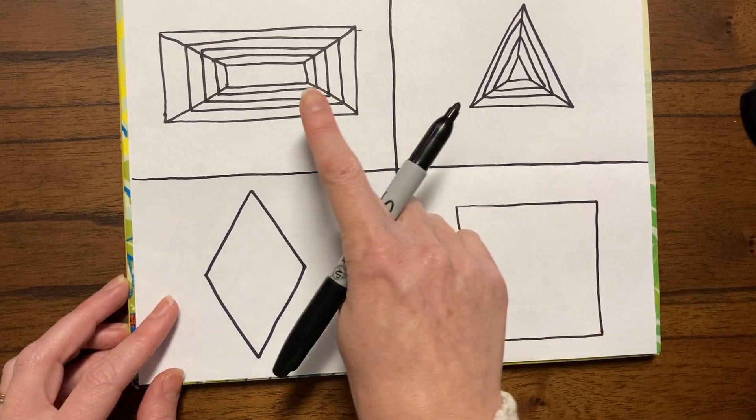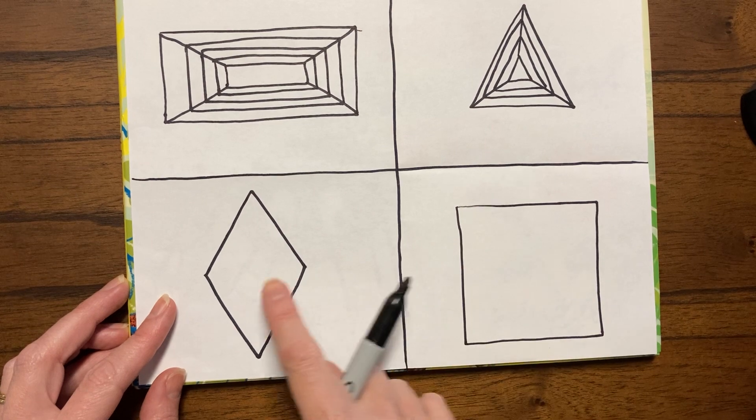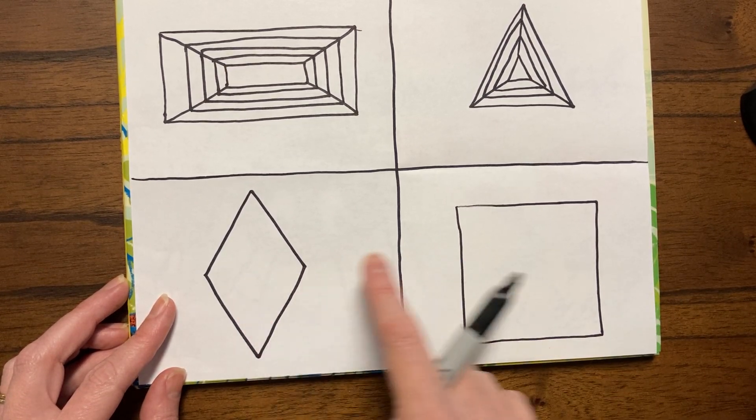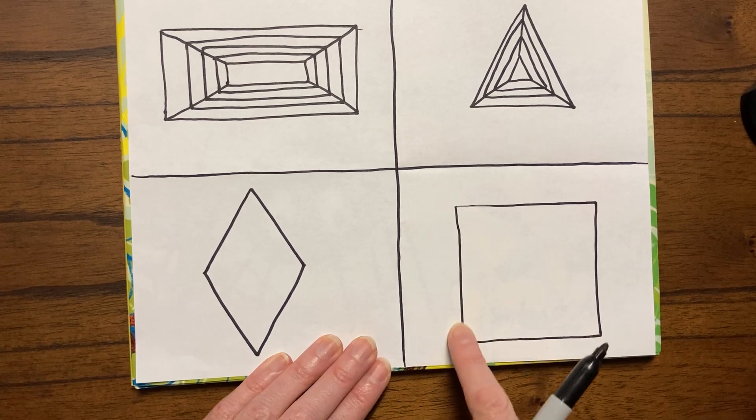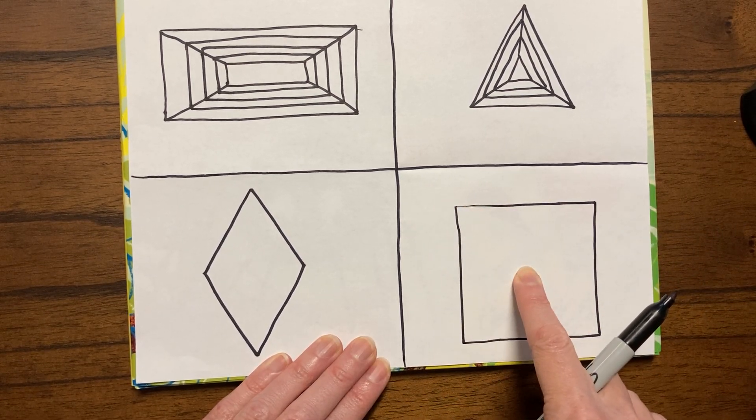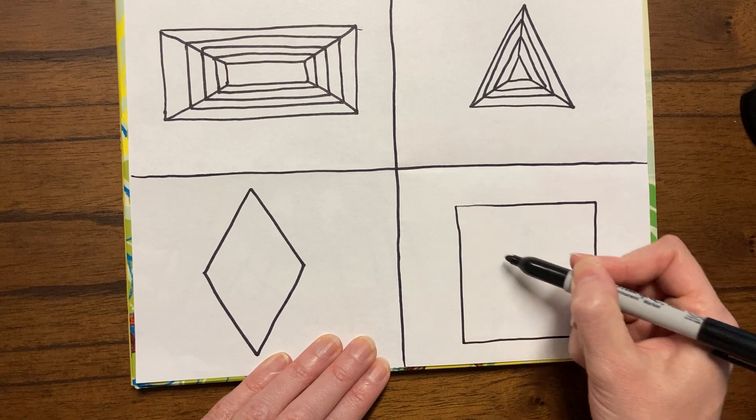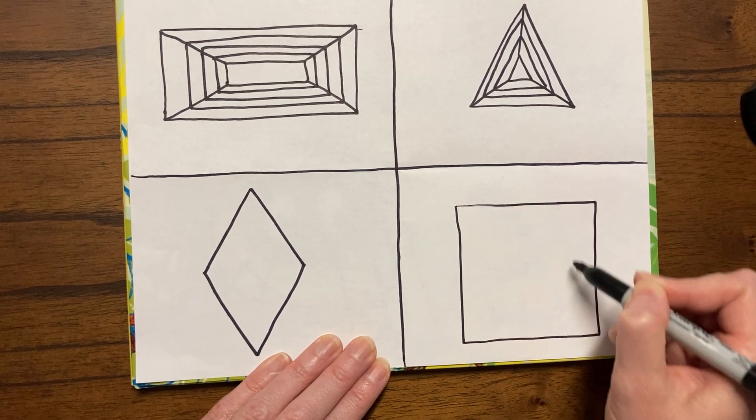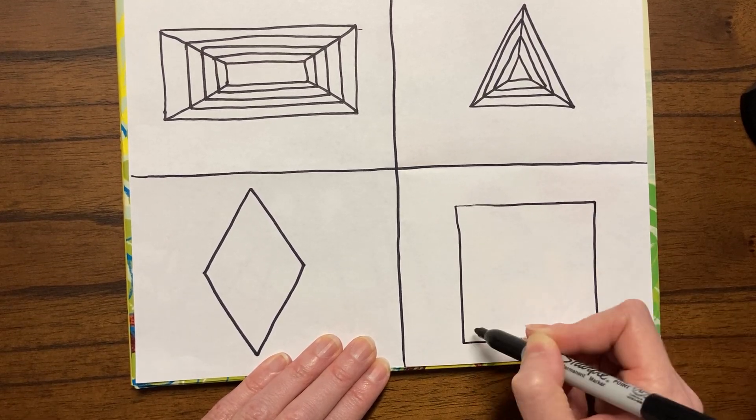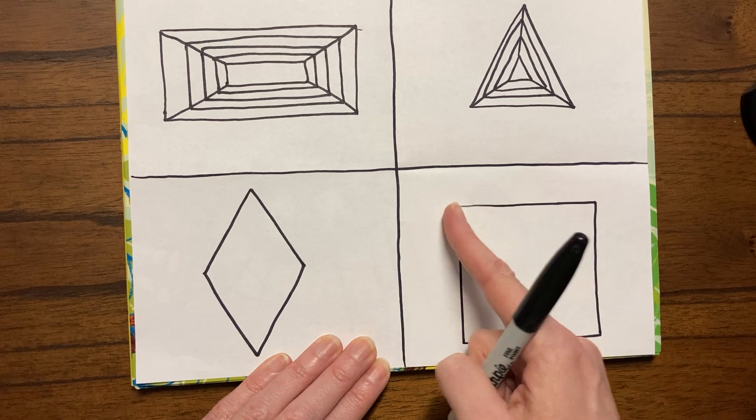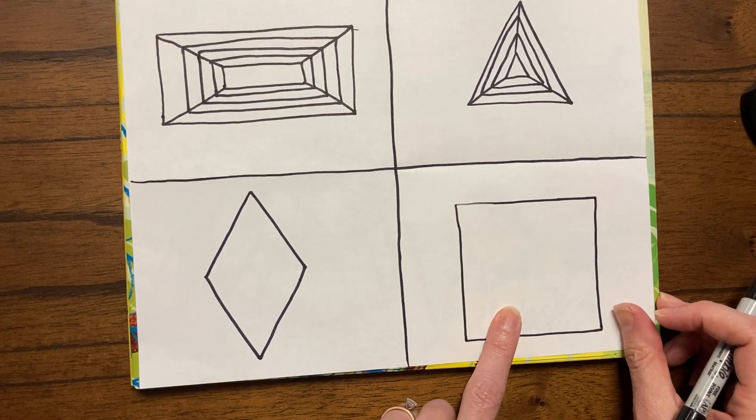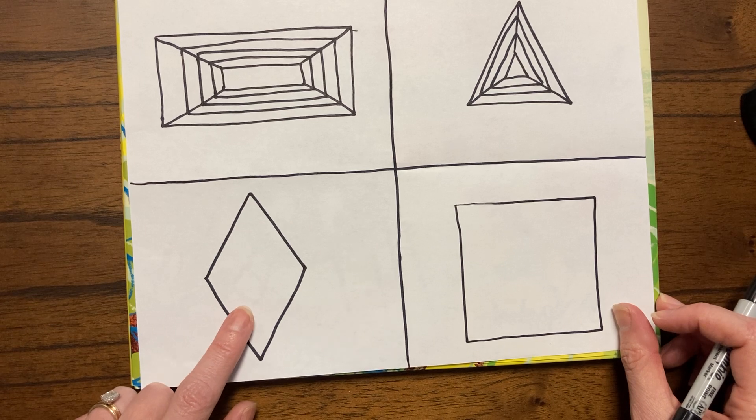Now, I want you to try these two by yourself right now. So remember, the first thing we're going to do is look at the shape that we drew and draw a small one in the center. Then we're going to connect corners. And then we're just going to connect with other shapes that look like this one. I want to see if you can practice the square on your own and the diamond on your own. And then we'll have time to share in just a second.